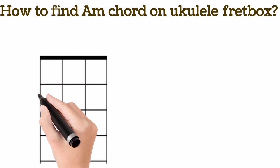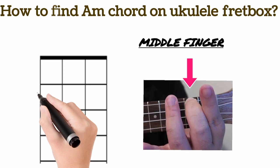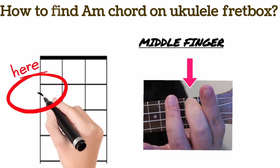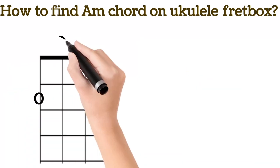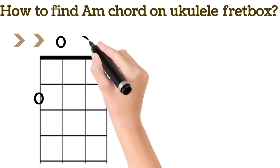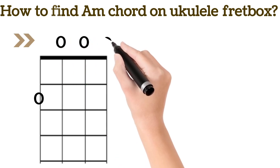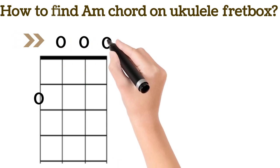To play the Am chord, place your middle finger on the 2nd fret of the 4th string of the ukulele. For the rest of the strings — 3rd, 2nd, and 1st — leave them as open strings, indicated by zero in tab reading.